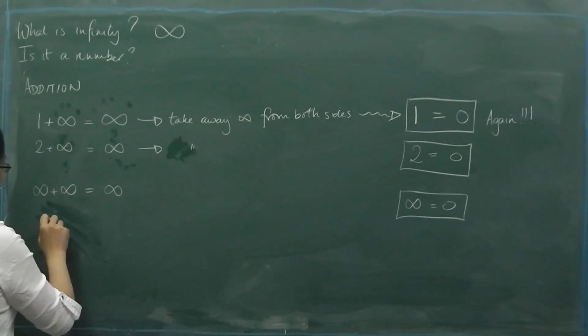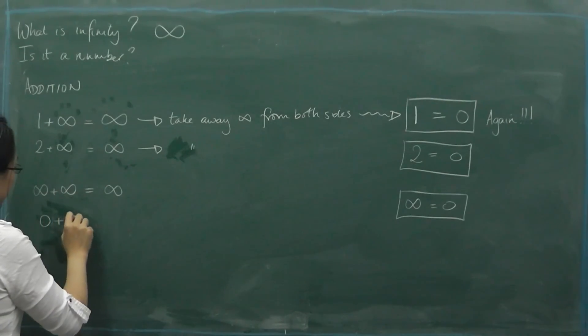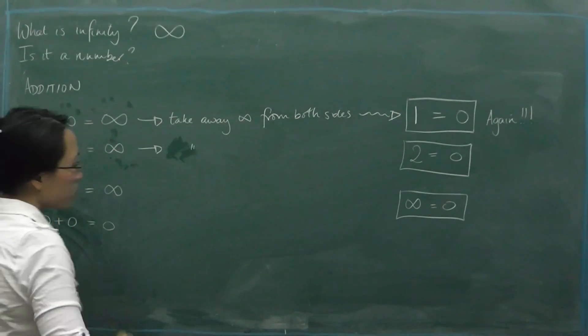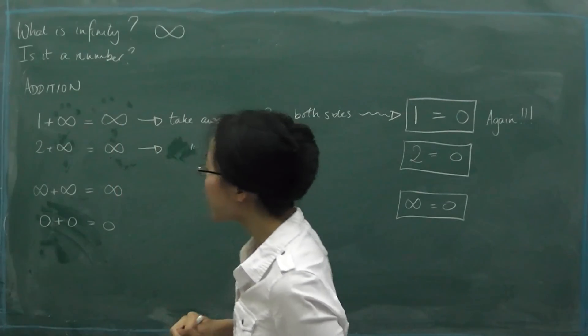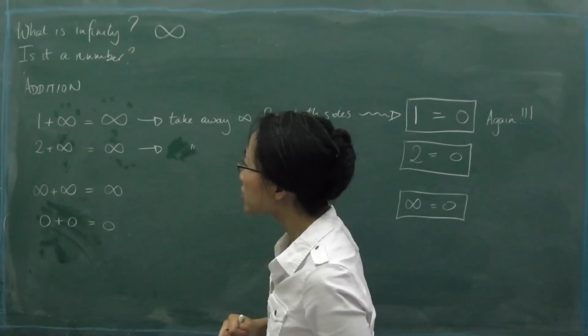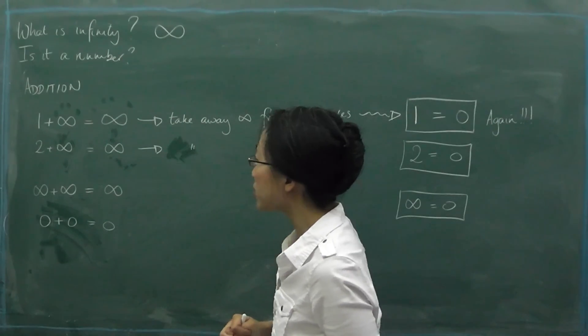Well, there is always zero, isn't there? There is always zero add zero equals zero. So zero is a bit special already. Infinity might, maybe infinity is just a kind of special number and you have to be very careful about what you do with it.